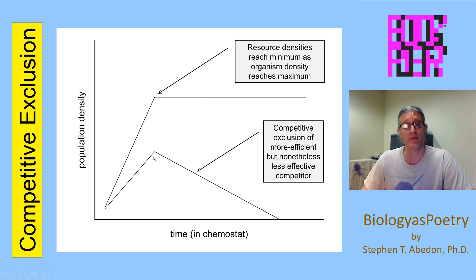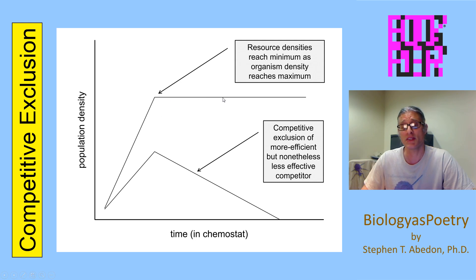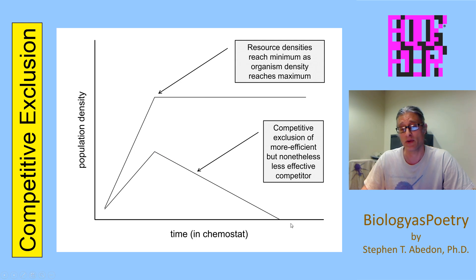Here's another organism that simply is not as effective at gathering up resources, and as a consequence, as the resources decline within the environment due to this population's density becoming higher, this organism reaches a point where the density of resources is insufficient to sustain the organism, and the organism goes extinct.